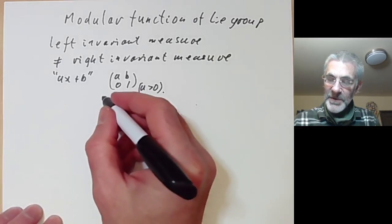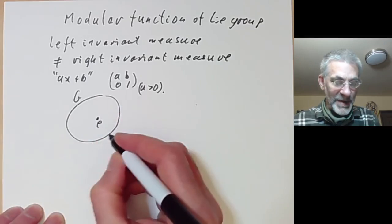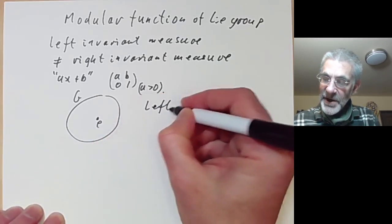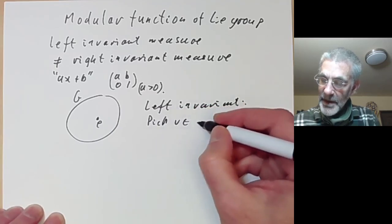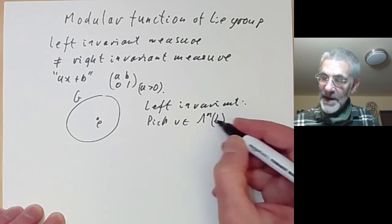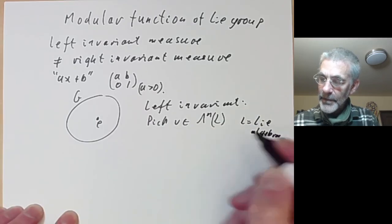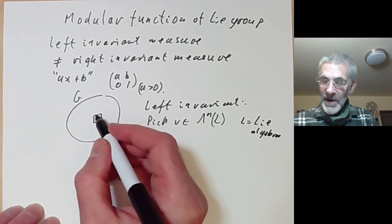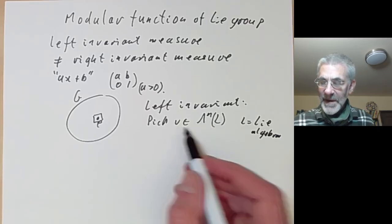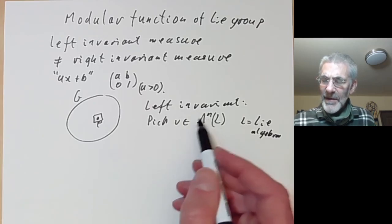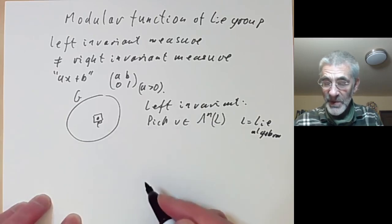Suppose you've got a group G — I'll draw it as a big blob — with an identity element E. We pick V in the nth exterior power of the tangent space at the identity of G, where L is just the Lie algebra. We don't really quite want V in the exterior power; as you remember from the last lecture, there's a sign problem connected with the orientation of G, but we will just ignore that and work with the exterior power for simplicity.